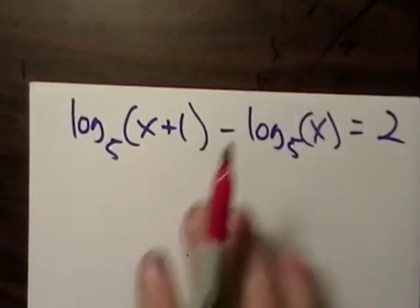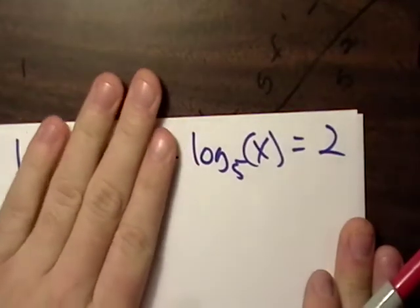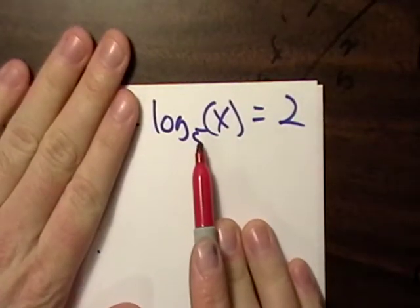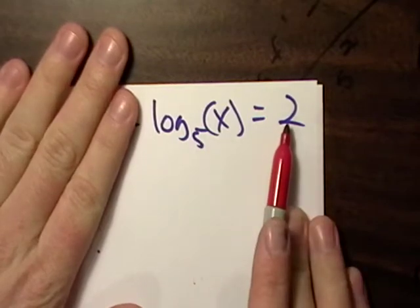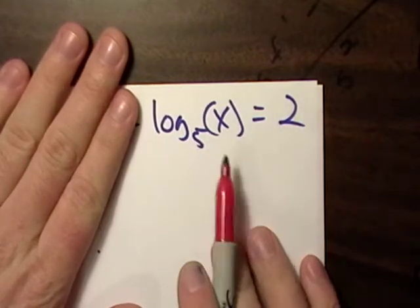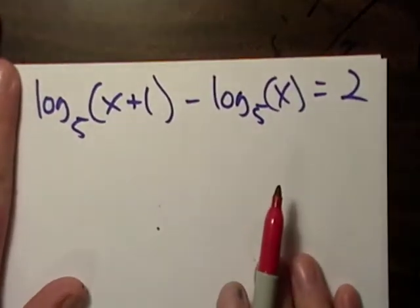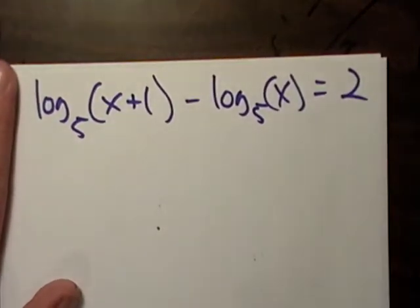Normally, if we had this, we'd say 5 to the 2nd equals x, so 25 equals x. But we have a whole other logarithm in here, so we can't really do that.